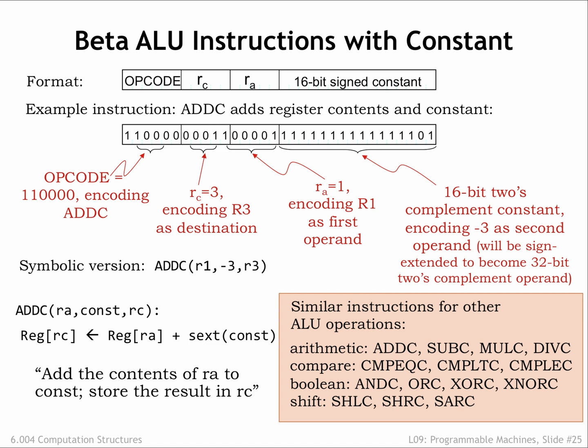Here are the 14 ALU instructions in their with-constant form, showing the same instruction mnemonics but with a C suffix to indicate that the second operand is a constant. Since these are additional instructions, they have different opcodes than the original ALU instructions. Finally, note that if we need a constant operand whose representation does not fit into 16 bits, then we have to store the constant as a 32-bit value in a main memory location and load it into a register for use, just like any variable value.